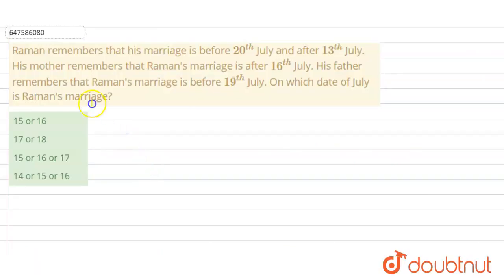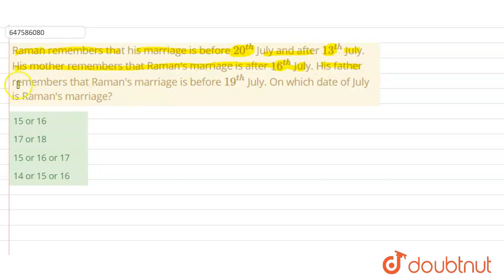Hello everyone, let's solve the question. The question says: Raman remembered that his marriage is before 20th July and after 13th July. His mother remembered that Raman's marriage is after 16th July. His father remembered that Raman's marriage is before 19th July. On which date of July is Raman's marriage?